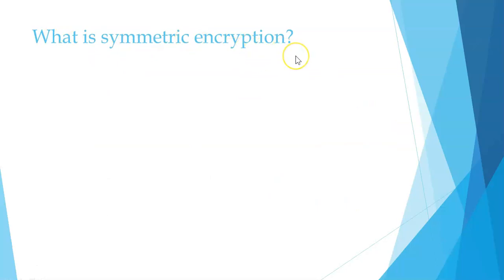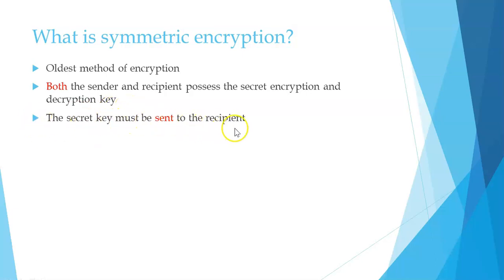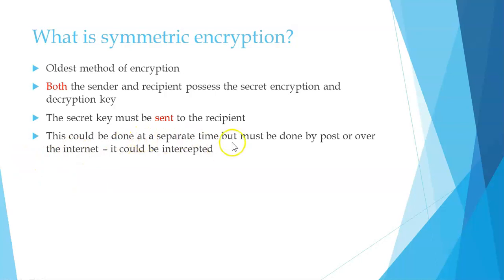There are two types of encryption the book focuses on: symmetric and asymmetric. Symmetric encryption is the oldest method. In this method, both the sender and recipient possess the same secret encryption and decryption key. The secret key must be sent to the recipient — this could be done at a separate time — but whether sent by post or over the internet, it could potentially be intercepted.